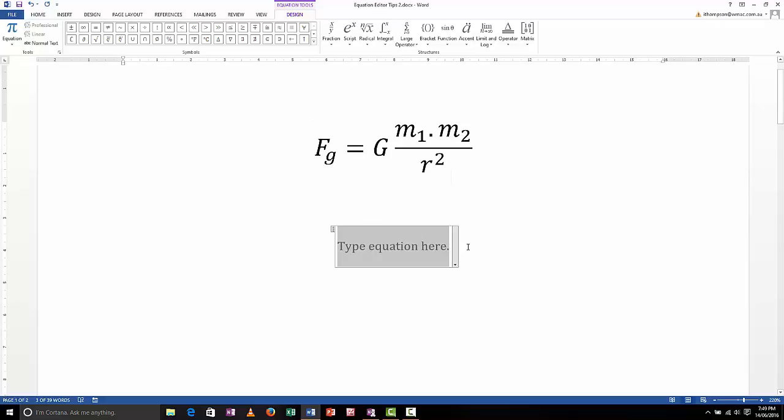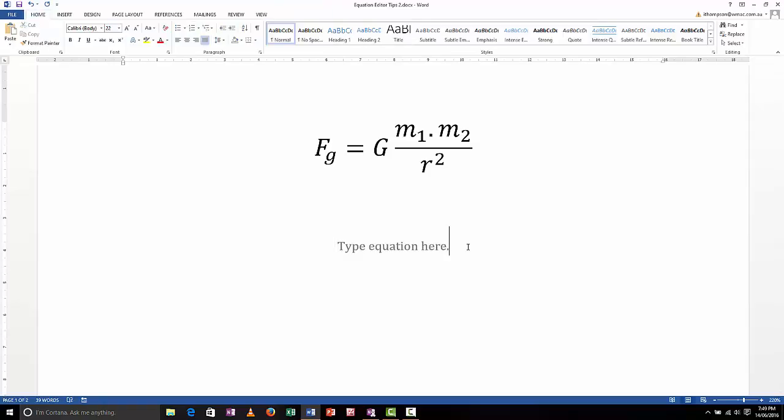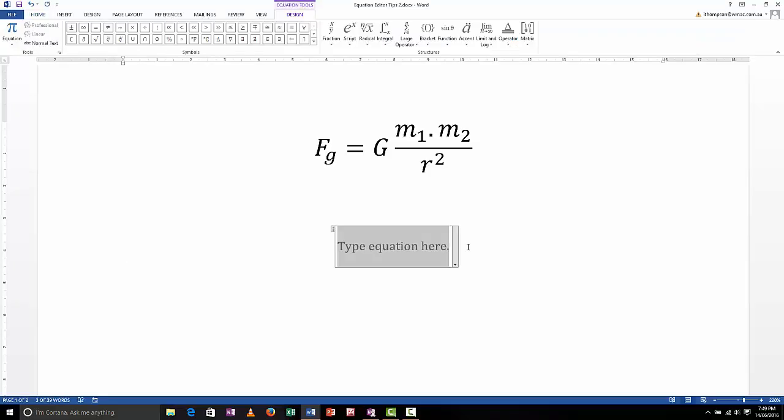I'm going to show you now how to use keyboard shortcuts instead of the mouse and the menu system. While the mouse and the menu system is actually quite intuitive and easy to use, it's not very quick. If you're going to use equation editor a lot, it is well worth your while learning how to use the keyboard shortcuts. The first keyboard shortcut to learn is Alt+equals. If I hold down Alt and press equals, that starts equation editor, so much quicker than using the mouse.